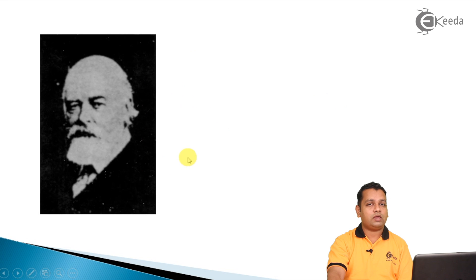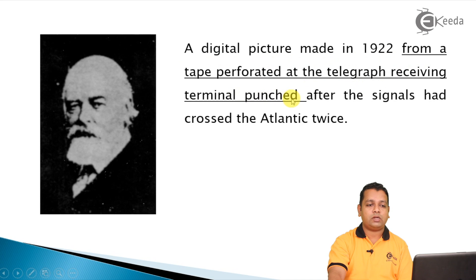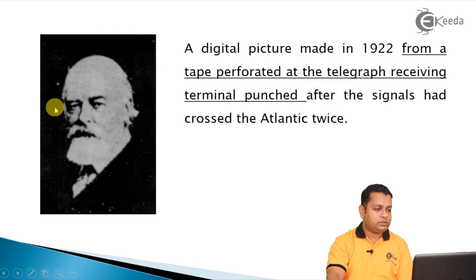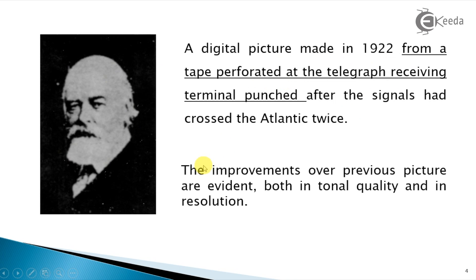A second image was taken in 1922 — a digital picture from a tape perforated at the telegraph receiving terminal, punched after signals crossed the Atlantic twice. The Bartlane Cable Picture Transmission System was later abandoned and a new technique was introduced. Improvements in this second picture compared to the previous one are visible both in tonal quality and in resolution.